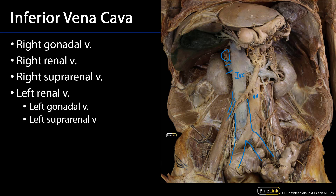Let's take a look at what's going on on the left side. You can see a very nice left renal vein receiving several tributaries. Here's a common trunk that receives the left inferior phrenic vein as well as the left suprarenal vein from the left suprarenal gland. You can also see a left gonadal vein there.